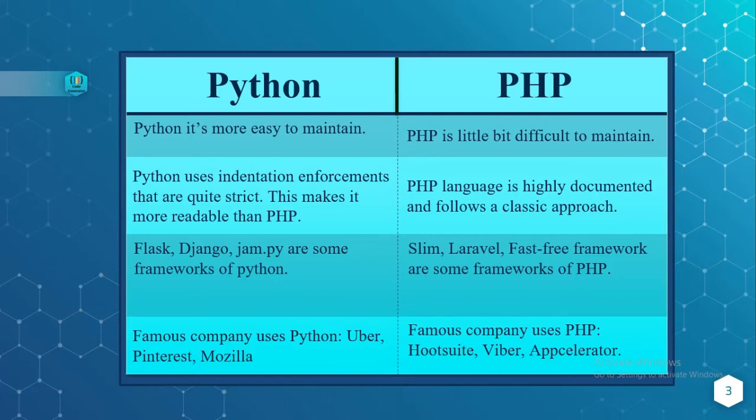PHP is a little bit difficult to maintain because it has high numbers of frameworks and its syntax is a little bit complex. Python uses indentation enforcement that is quite strict, which makes it more readable than PHP. Whereas PHP language is highly documented and follows a classical approach.